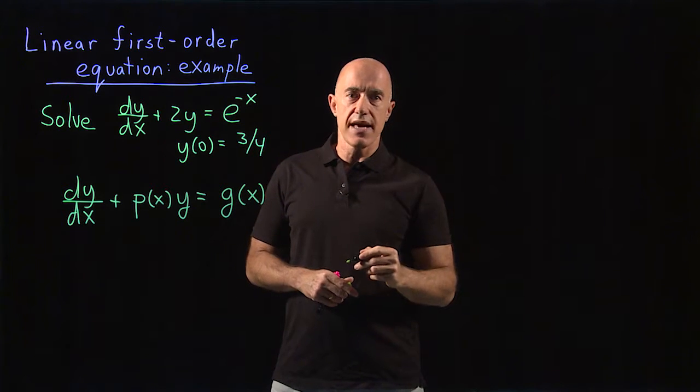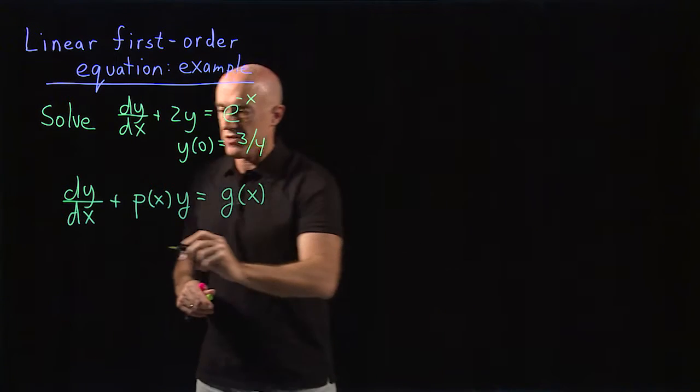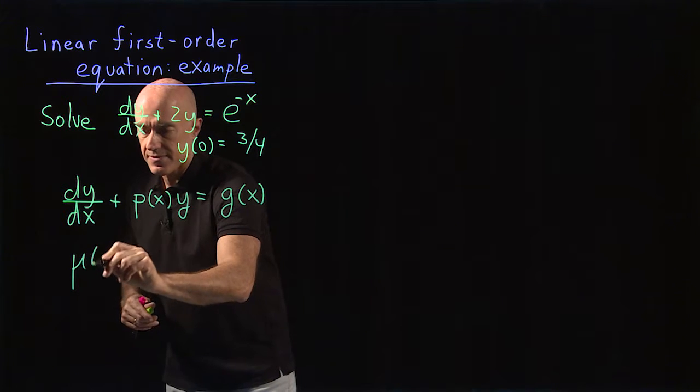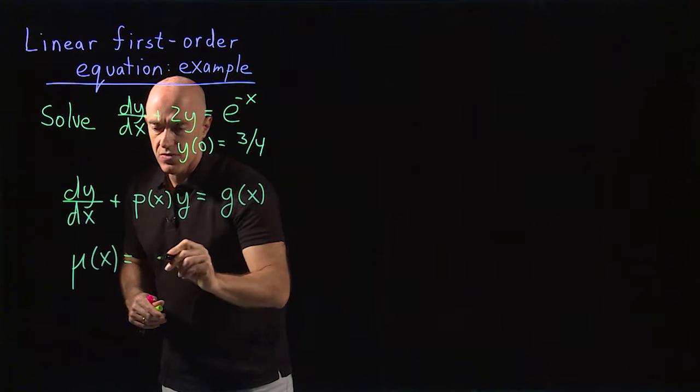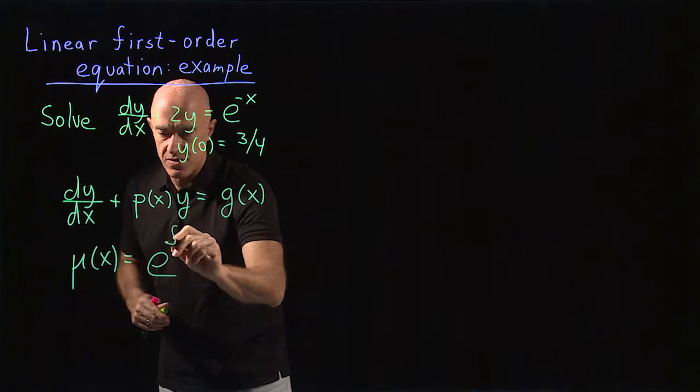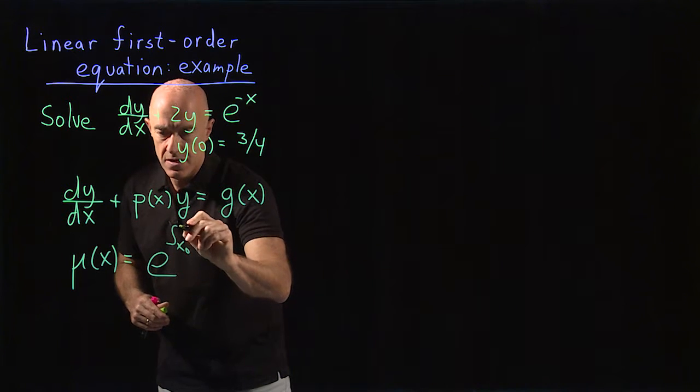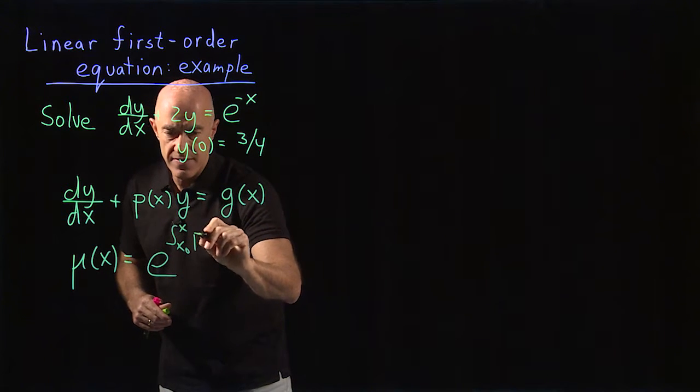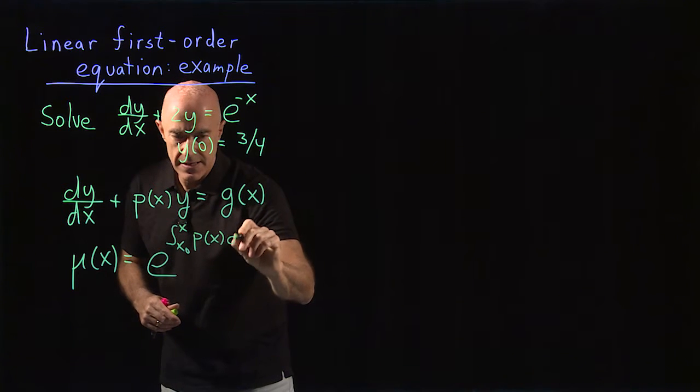The first thing you do is calculate the integrating factor. So μ(x) is equal to the exponential of the integral from x₀ to x of p(x)dx.